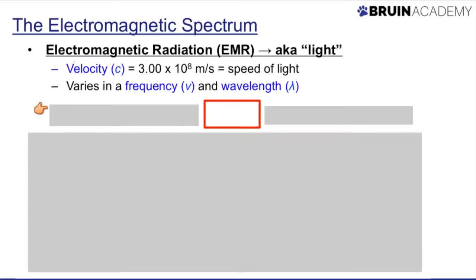All right, so electromagnetic radiation, as I mentioned before, EMR, is also known as light, always has a constant velocity. Technically, this is only true in a vacuum, but it's always going to be 3 times 10 to the 8th meters per second, which really is the speed limit of the universe. There's nothing that can go faster than that, and that's the speed of light.